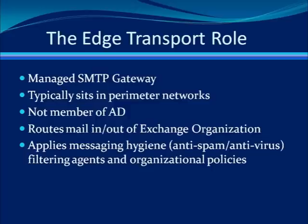The edge transport server role sits in the perimeter of your network. It is not part of Active Directory and cannot be installed with any other role. It resides on the perimeter using Active Directory Application Mode if you're running Server 2003, or Active Directory Lightweight Directory Services if you have a server running Server 2008. The edge servers synchronize with hub transport servers on the internal network. Its purpose is to provide additional security, like anti-virus and anti-spam, to your messaging organization. While not required, it is certainly recommended that you use an edge transport server role when possible.